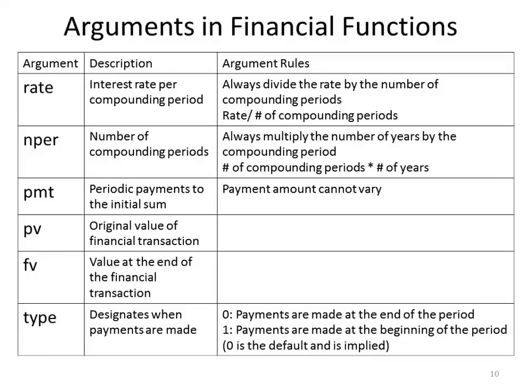The PV argument is the present value — the original value of the financial transaction. The FV argument is the value at the end of the financial transaction. The type argument designates when payments are made: if you put a 0, payments are assumed at the end of the period; if you put a 1, payments are assumed at the beginning of the compounding period. Zero is the default, and for this class we will always assume payments are made at the end of the period, unless specifically told otherwise.